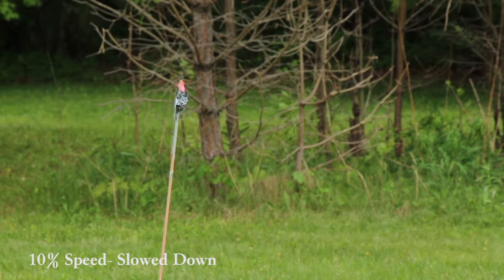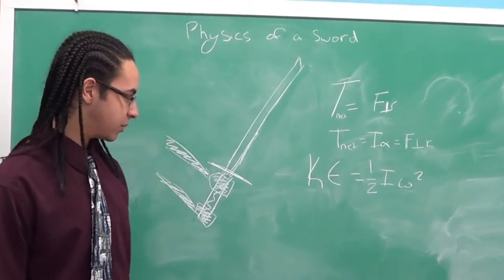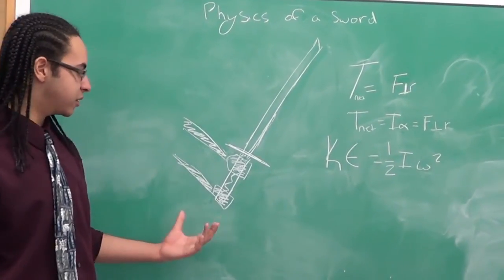So that's how a bow works. Hello, my name is Gabe Evans, and today we'll be explaining the physics behind the sword. So as you can see, this is a picture of a sword, and these are the equations we're going to use.